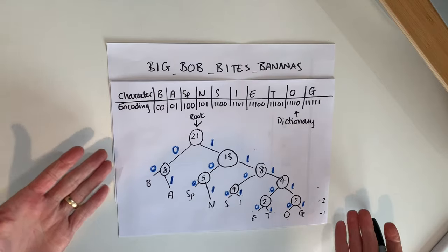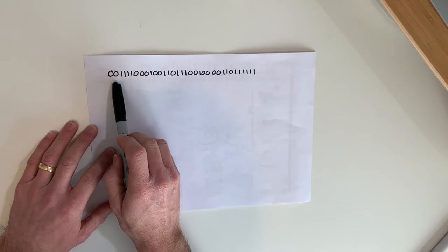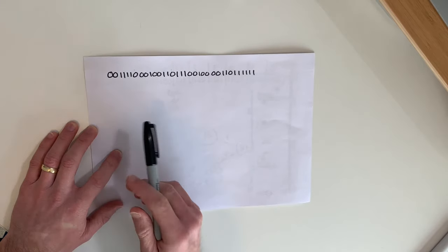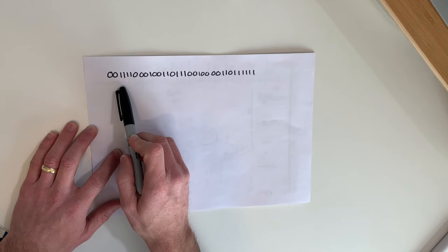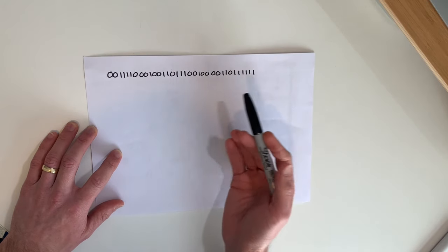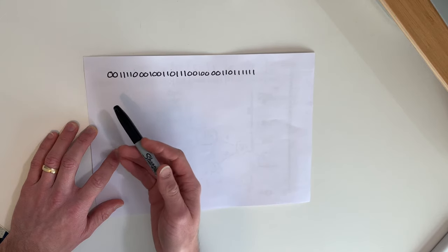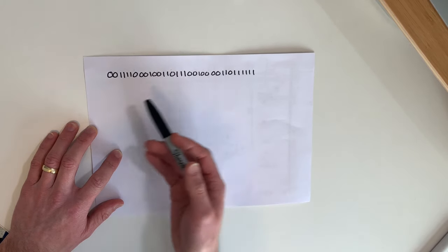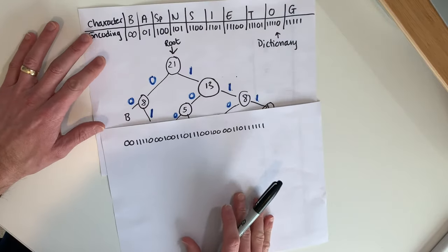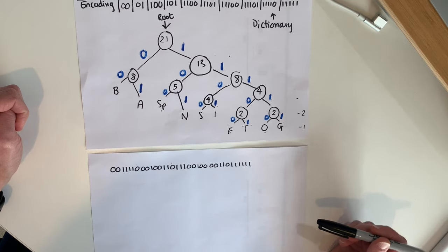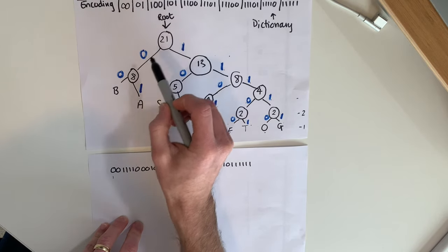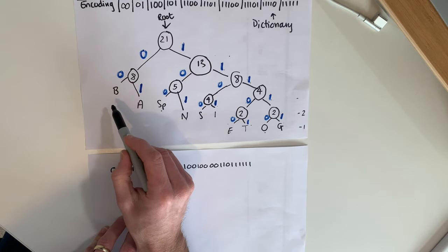Now let's see how we would actually use this to decode a message. Here is a binary string encoded using this Huffman tree, and we need to decode it back into a message. One of the first things you'll think is: I don't even know when a character starts and ends, because they're not fixed bit widths. It's not like seven bits per character as in ASCII — some characters could be two bits, others three bits. So how do we break this down into a meaningful string? It's actually surprisingly easy.